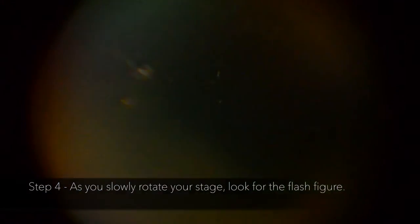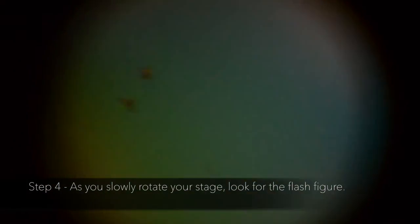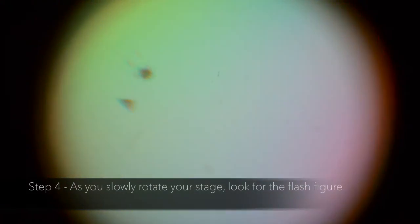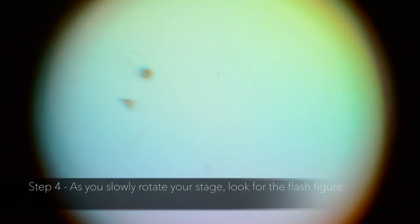Step 4: As you slowly rotate the stage, your figure should become extinct and then illuminate itself, similar to a uniaxial flash figure. Here, I am only rotating the stage by very little, only a couple of degrees. You may be able to see a faint thick cross appear and disappear as you rotate your stage. This is unique to biaxial minerals.